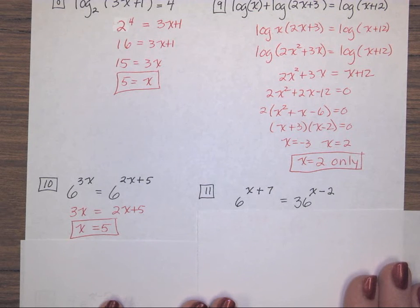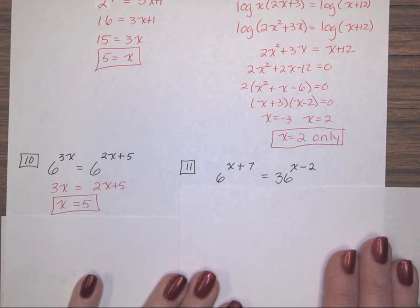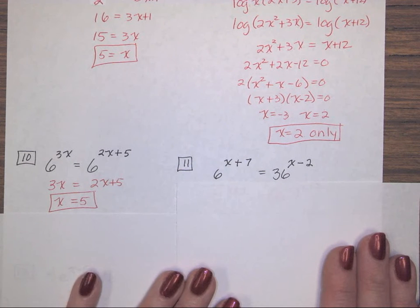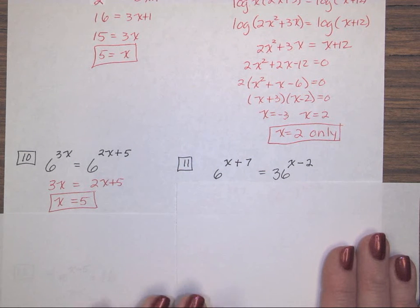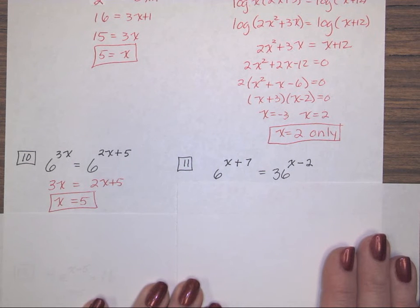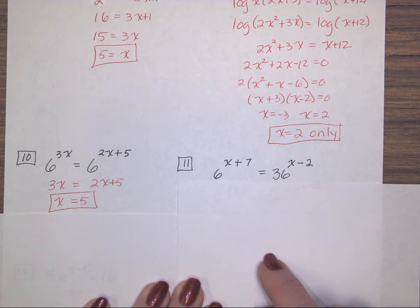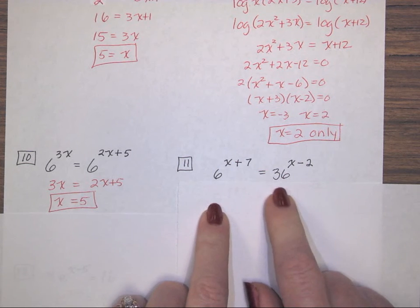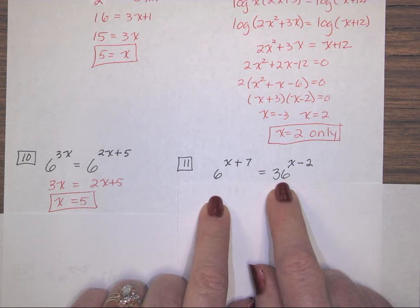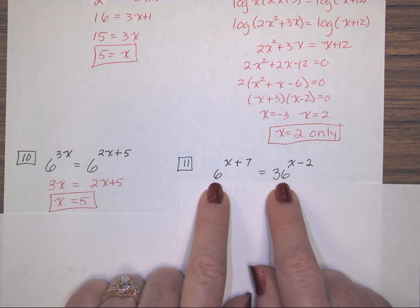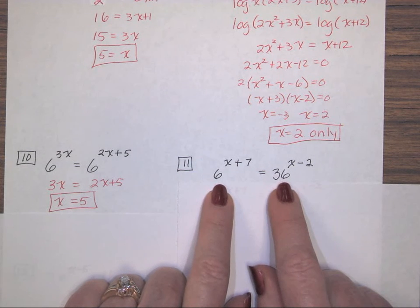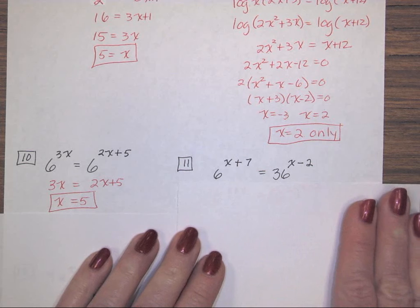Number 11. I have 6 with an exponent of x plus 7 equals 36 with an exponent of x minus 2. This time, my two different sides do not have the same base, but this 36 can be written as 6 squared. So, I can write it with the same base. So, I do that. I change 36 to be 6 squared.